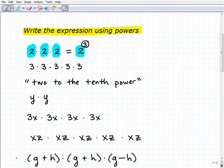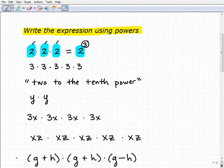The 3 right up here, that's called the exponent. That indicates how many times we're multiplying. Here we're doing it 1, 2, 3 times.